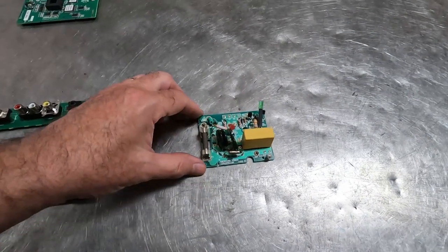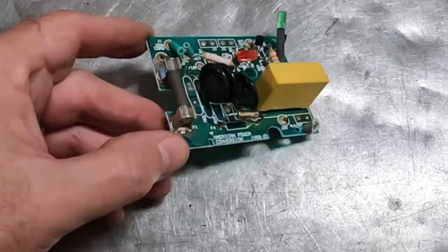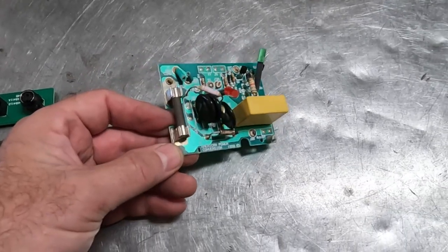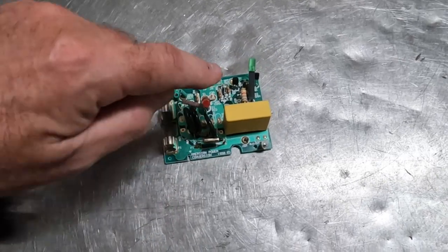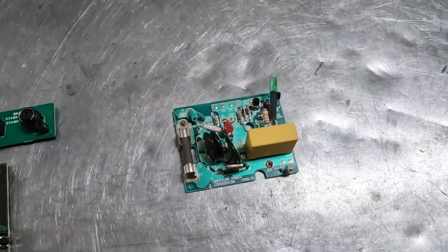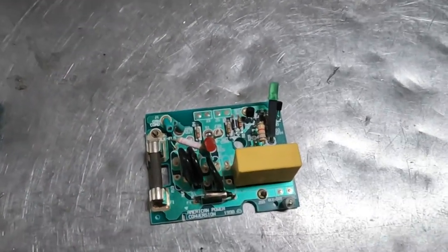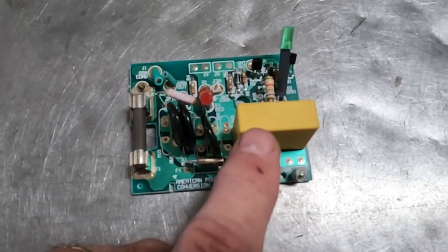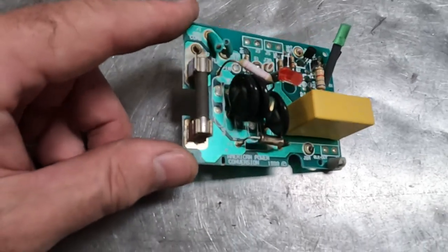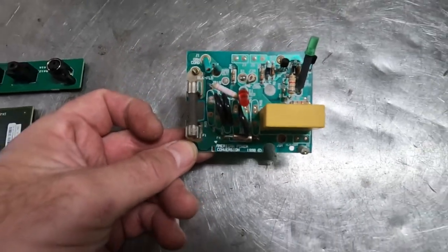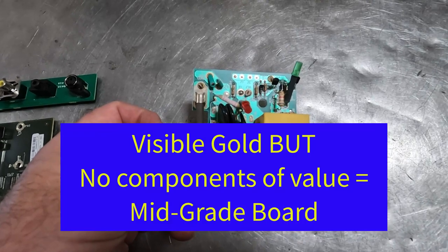Now this board, as I hold it in the light at various angles, you should be able to see visible gold on this board, which would make it a peripheral board. But there really are no components of any great value. There might be gold-plating inside of some older-style resistors, maybe silver in some connectors, but this board just doesn't have much going for it other than the gold ENIG. So this is an example of the exception to the rule — there's visible gold, but this is a mid-grade board because there are no components of any value.